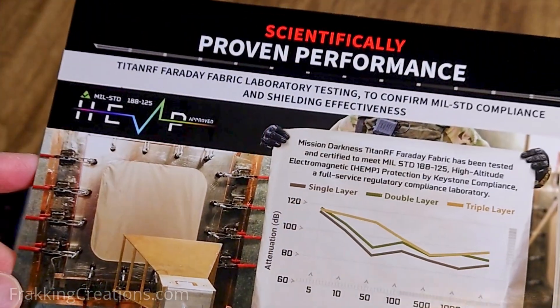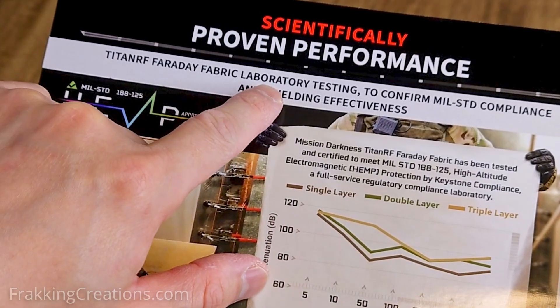I chose this Titan RF Faraday fabric since they have been lab tested plus it has a nice finish. It's a nicely woven fabric made of about 25% metallic copper, 13% nickel, and 62% polyester. So it's pretty easy to work with.